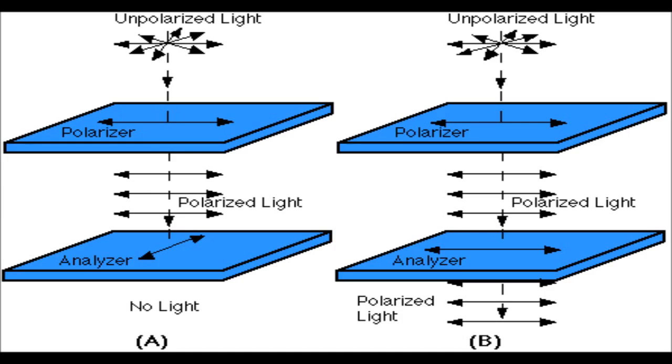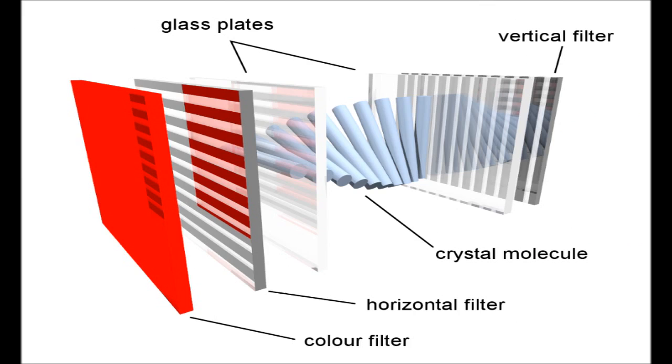Now this is where the principle of liquid crystals come into play. Liquid crystals naturally have a spiral structure that the light will follow. This allows the streams of light that have been organized by the first filter to be rotated so that they can fit through the second filter without being interrupted.